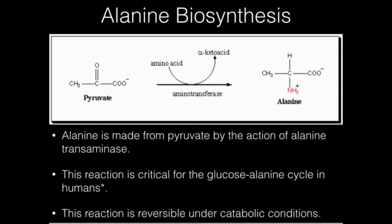In this video, we're going to discuss alanine biosynthesis. This is a relatively simple process — we're just going to use pyruvate to do this. We have this concept that glycolysis is going to ultimately produce two pyruvate per glucose, and that pyruvate has several fates that it can undergo.